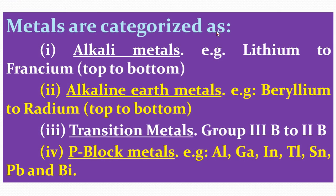Metals are categorized as follows. First, alkali metals — Group 1 metals, example lithium to francium. Second, alkaline earth metals — Group 2 elements, example beryllium to radium. Third, transition metals — Group 3B to 2B, or Group 3 to 12. Fourth, P-block metals — in the P-block, some metals are present: aluminium, gallium, indium, thallium, tin (Sn), lead (Pb), and bismuth (Bi). So all metals are categorized into alkali metals, alkaline earth metals, transition metals, and P-block metals.